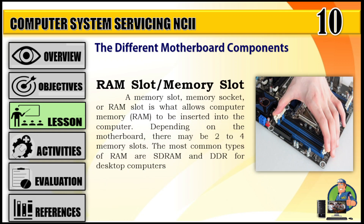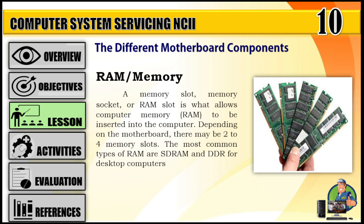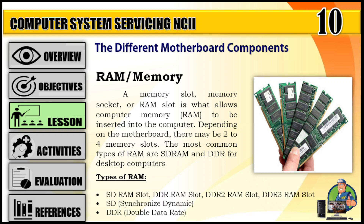RAM slot or memory slot: A memory slot, memory socket, or RAM slot is what allows computer memory (RAM) to be inserted into the computer. Depending on the motherboard, there may be two to four memory slots. The most common types of RAM are SDRAM and DDR for desktop computers. Types of RAM include: SDRAM slot, DDR RAM slot, DDR2 RAM slot, DDR3 RAM slot. SD stands for Synchronous Dynamic; DDR stands for Double Data Rate.